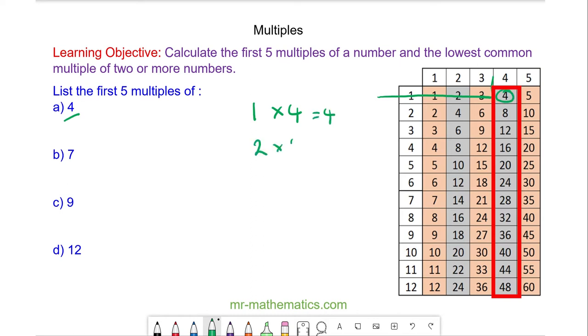The second multiple of 4 is the second number in the 4 times tables which is 8. The third multiple of 4 is 12. The fourth multiple and the fifth multiple.